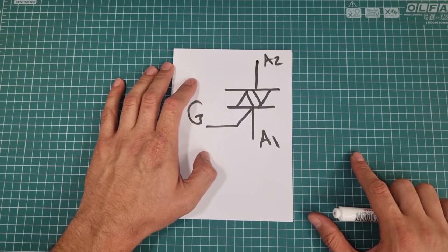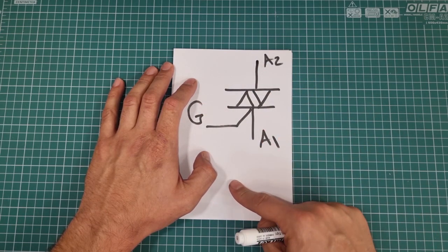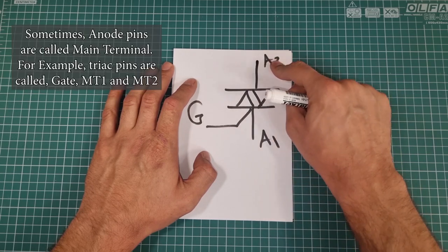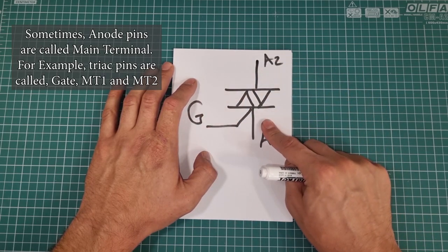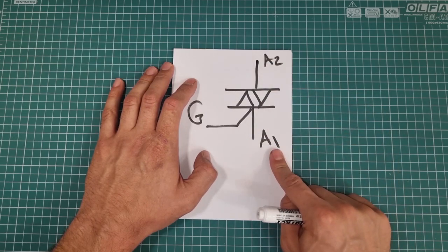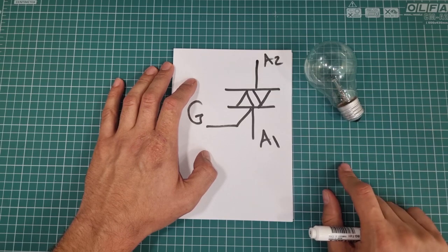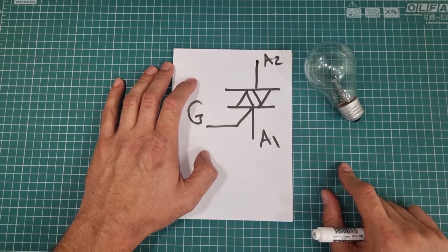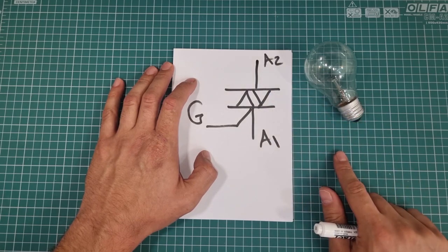Triacs are three-pin components, and this is their schematic symbol. Here are pins: gate pin, anode 1, and anode 2 pins. Gate pin is for triggering the switch, and anodes are for passing electricity to the load, in this case, the light bulb. Since triacs are AC switches, and AC means electricity in either direction, it means that triacs can pass electricity in both directions.